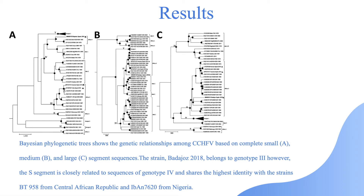In the results, the black dots indicate the nodes with the posterior probabilities. The bold face indicates CCHFV strains from Badajoz 2018 from Spain. The arrowheads indicate other isolated cases from Spain, and the Roman numerals indicate the genotypes. Bayesian phylogenetic trees show the genetic relationship among CCHFV based on the complete small, medium, and large segment sequences. The strain Badajoz 2018 belongs to genotype 3; however, the S segment is closely related to sequences of genotype 4 and shares the highest identity with strains from BT-958 from the Central African Republic and IBAN-7620 from Nigeria.